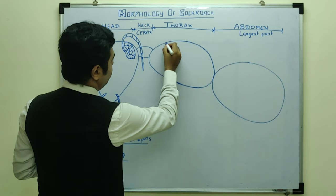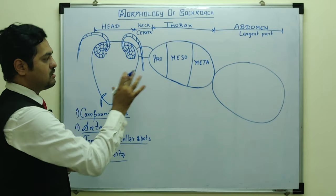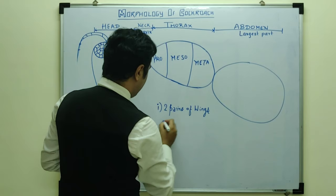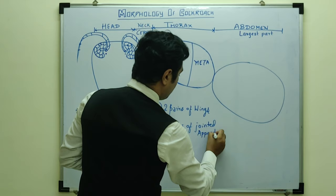Now coming to the thorax: it is divided into three regions — prothorax, mesothorax, and metathorax. In the thorax we have two structures to discuss: first, two pairs of wings, and second, three pairs of jointed appendages.